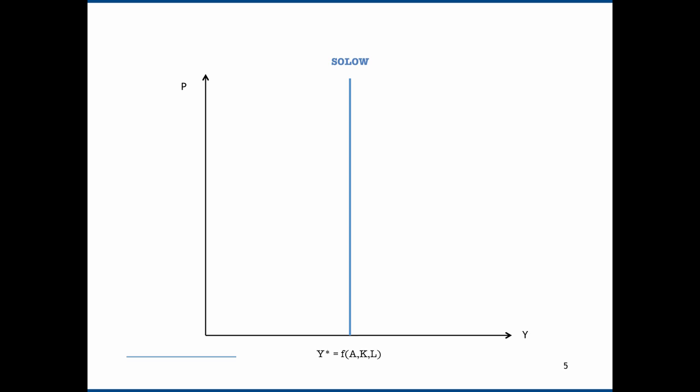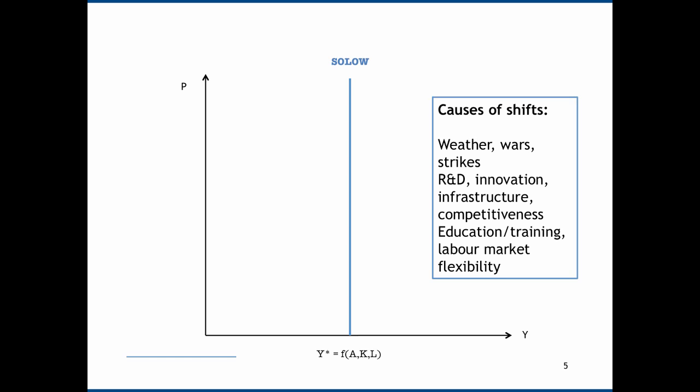We can also think about what's going to cause shifts in the Solo curve. Things like weather, wars, strikes, changes in R&D, innovation, infrastructure improvements, competitiveness, supply-side policy generally such as education or training, and making the labour market more flexible — all of these things are going to affect our variables A, K, and L. They might make capital better, mean that we have better labour, or mean that we have better combinations of capital and labour, but they will all determine what Y star is.